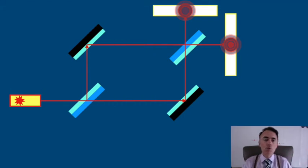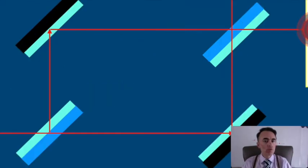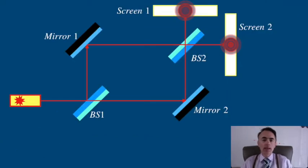Light following both paths goes through two full beam splitters independently of which screen it'll end up hitting.